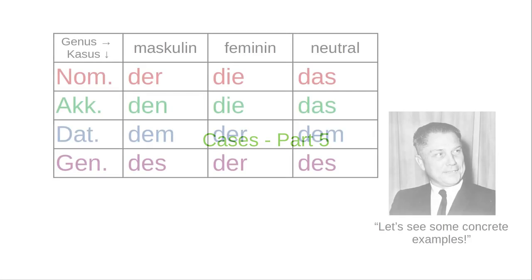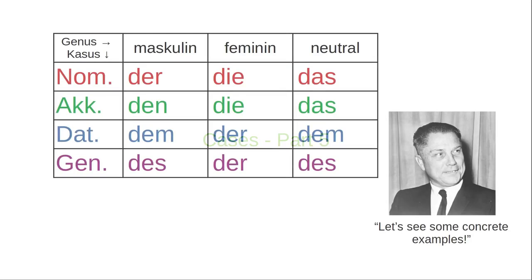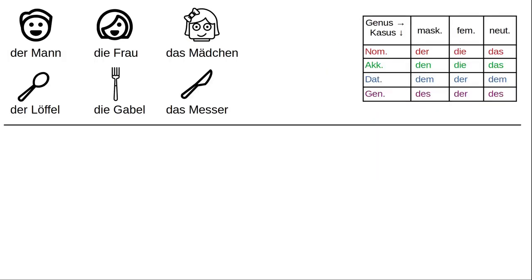At the end of the last video, we decided we needed some examples to help learn the forms of the definite article in German. We'll put the table here as a reminder and we'll use these nouns: Der Mann, die Frau und das Mädchen — the man, the woman, and the girl.